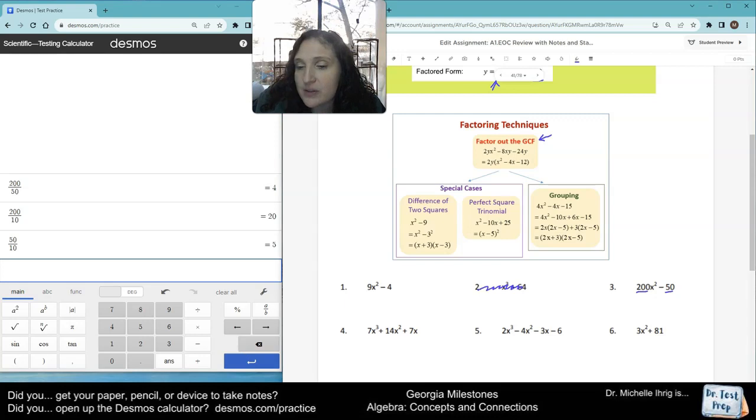For our purposes, we're not going to do this one, nor this one. So here, I will take out the 50. And when I do that, I noticed that 200 divided by 50 is 4. So this becomes 4x squared. And 50 divided by 50 is 1. So in here, I'm left with 4x squared minus 1.